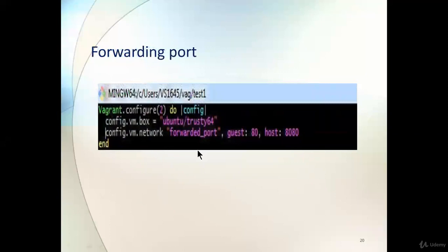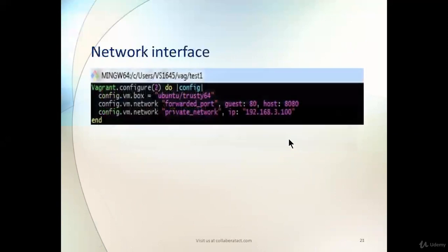To forward a port, for example forwarding guest port 80 to host port 8080: whatever service is running on port 80 in the guest Ubuntu machine will be accessible on the Windows host machine on port 8080. To define an IP address for the Ubuntu machine, use `config.vm.network "private_network", ip: "192.168.33.10"` — this assigns a private IP to the guest machine.